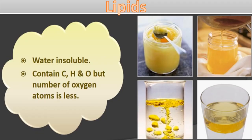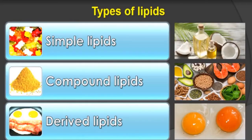Lipids are water-insoluble molecules — they are not soluble in water. Lipids contain carbon, hydrogen, and oxygen, but the number of oxygen atoms is less than carbon and hydrogen. There are three main types of lipids: simple lipids, compound lipids, and derived lipids.